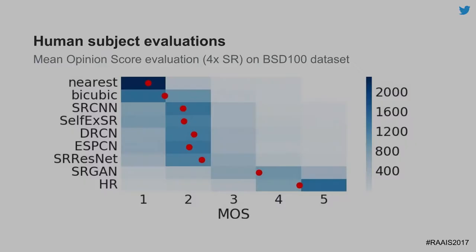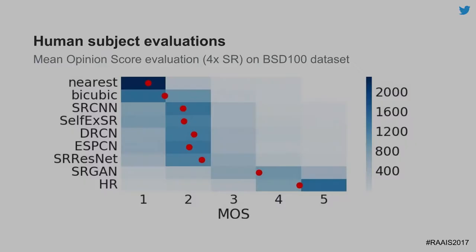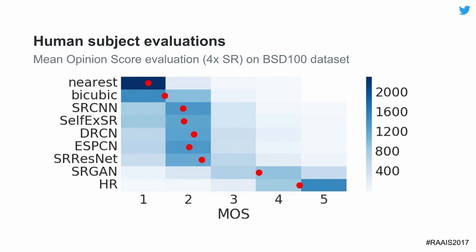When we did human subject evaluations using mean opinion score — asking people to rate images from 1 to 5, where 5 is the best — we see that using the SRGAN approach is far closer to the original high resolution in terms of what humans think of as quality, compared to any previous method.